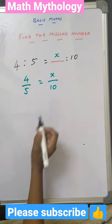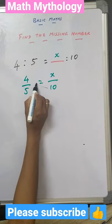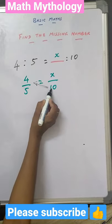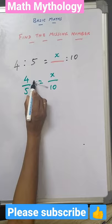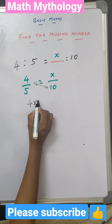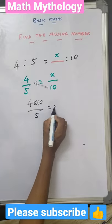Then we cross multiply this 10. When I move this 10 to the left side, it will become multiplied with the 4. So we get 4 into 10 divided by 5 equal to x.